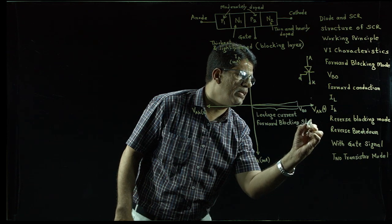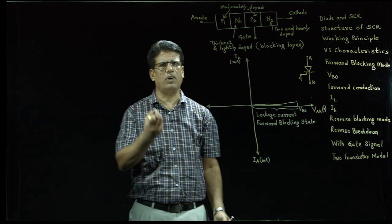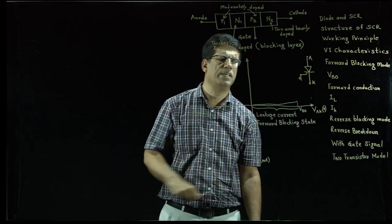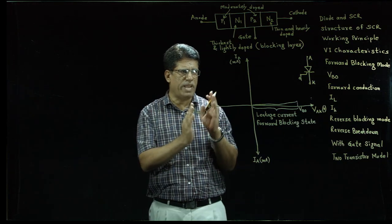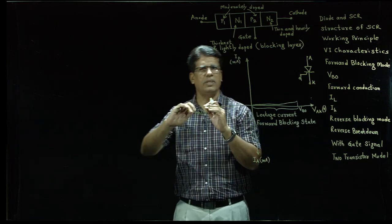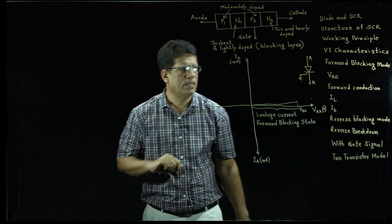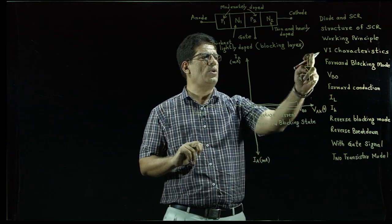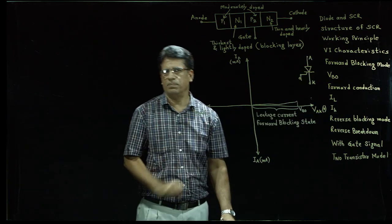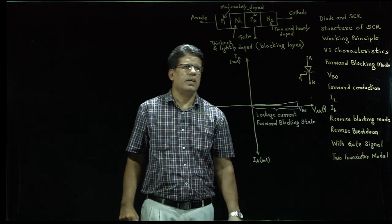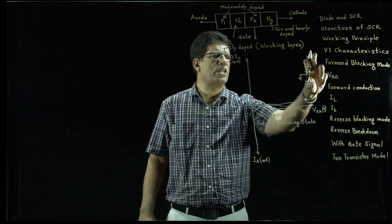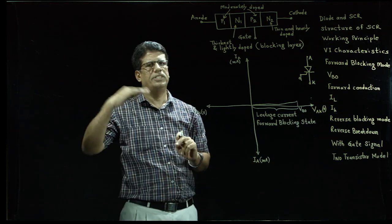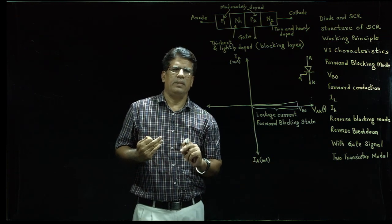Since the device is in forward bias condition and blocking — it is not in the conducting state, it is in the off state. This is one of the main parameters you will have to define while explaining the V-I characteristic. As soon as the anode-to-cathode voltage reaches the VBO value, breakdown of junction J2 takes place.